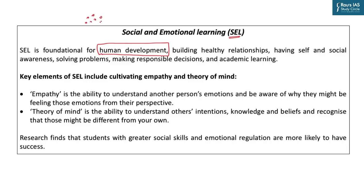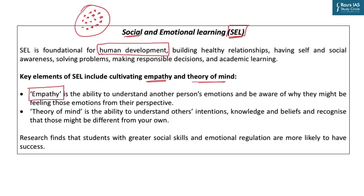Social and emotional learning actualizes the concept of Plato, who said that the parts must work for the benefit of the whole, and the whole must benefit the parts. For this concept to take effect, we have to be social beings, and that comes from social and emotional learning. The article highlights that social and emotional learning includes cultivating two things: empathy and theory of mind. Empathy is a very high human value — a term mentioned in the syllabus of GS Paper 4.